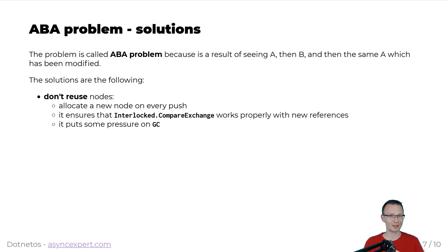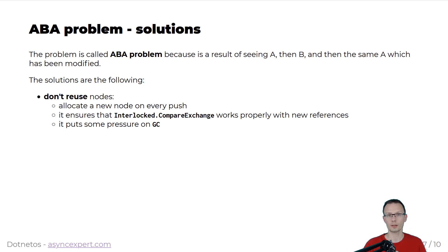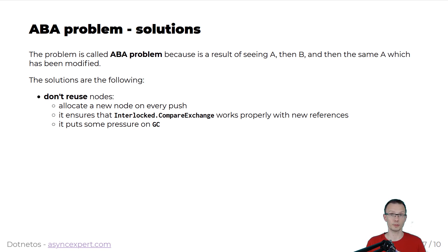If we have a problem, probably there are some solutions. The very first solution is to not reuse nodes — allocate a node on every single push. Whenever you push, just allocate the node. This will ensure that interlocked compare exchange will work, because new references are never equal to previously created objects. So every single time you allocate on push, it will ensure there won't be false equality with interlocked compare exchange. Of course, it puts some pressure on GC, but that's one of the solutions.